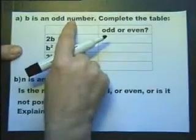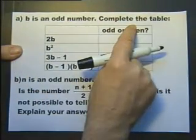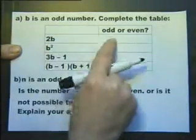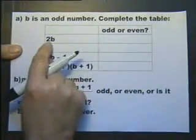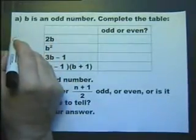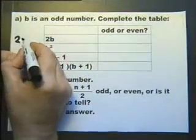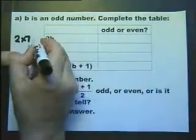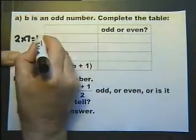B is an odd number. Complete the table. So, is this odd or even? Is this odd or even? So, if B is an odd number, let's pick any odd number, let's pick the number 7. If you multiply it by 2, any odd number, you'll end up with an even number.